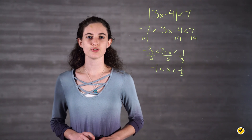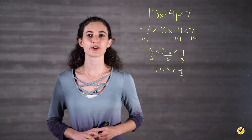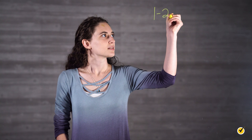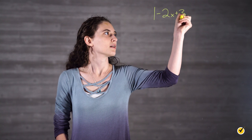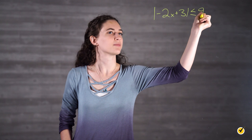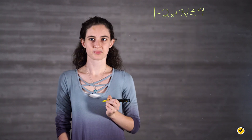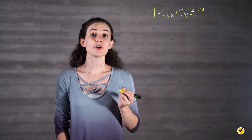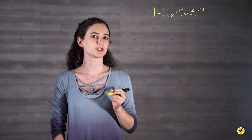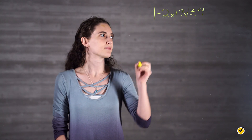Notice how you still solve for two different numbers, but your answer is the range of numbers between those two. Let's try another one. The absolute value of negative 2x plus 3 is less than or equal to 9. First, get rid of the absolute value signs and put the expression between negative 9 and 9.